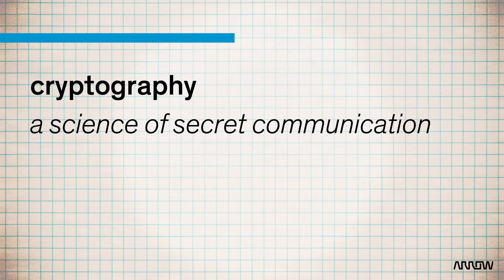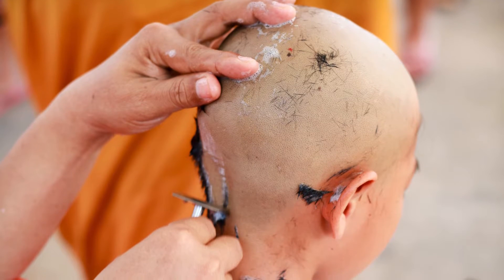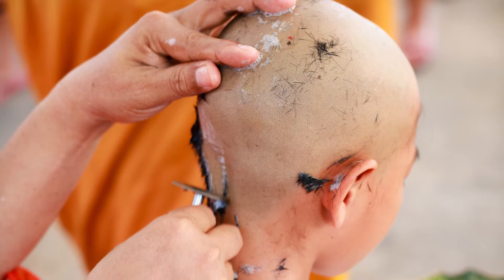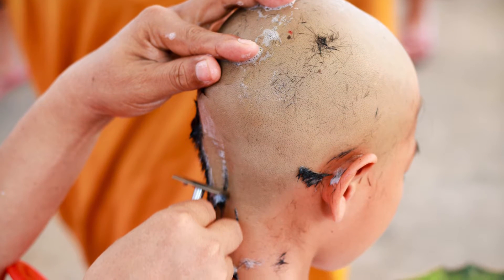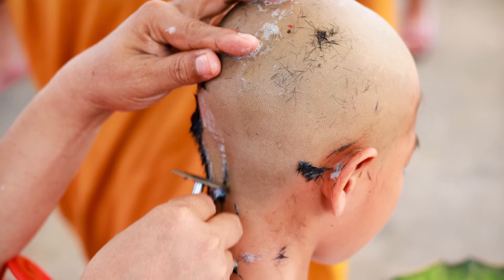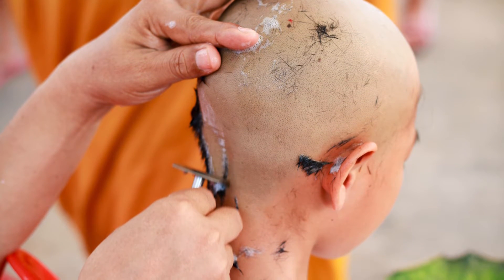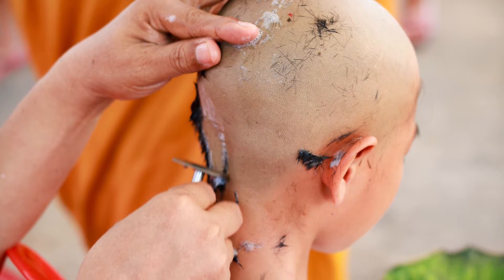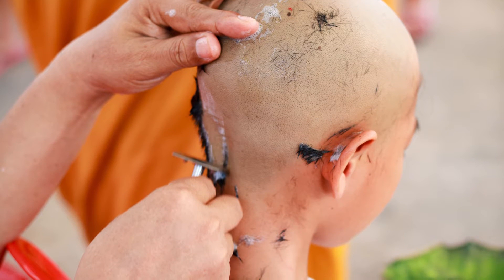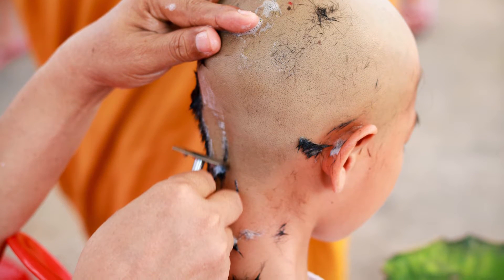One of the first known methods of cryptography was to shave the head of a messenger, write the message on his bald skull, wait for his hair to grow to hide the message, and finally send the messenger. Obviously, this method was very slow.